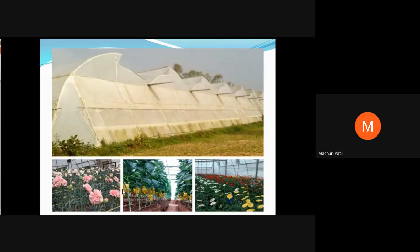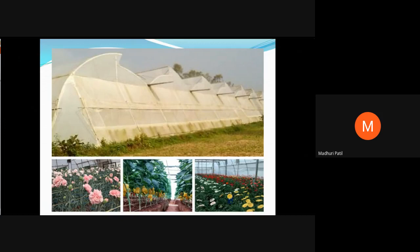Here are some pictures of the greenhouse. Transparent material has been used. Here are beautiful carnation flowers. Some vegetables, in which capsicum is grown. Then this is gerbera — you can observe that different color gerberas can be grown in a single poly house.